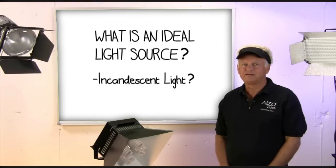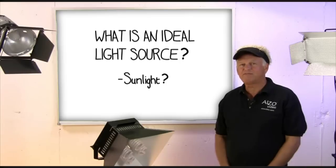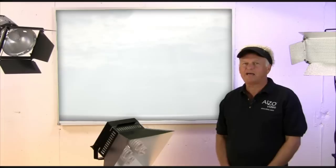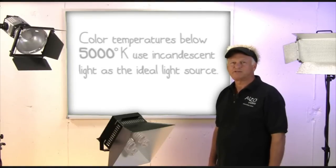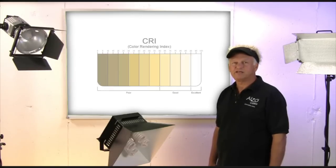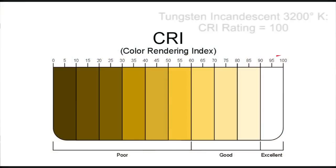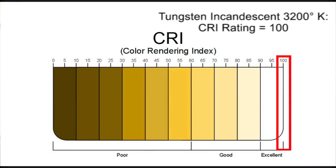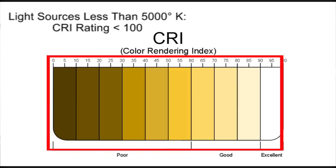Is it incandescent light? Or maybe it's sunlight? The sun can never be considered an ideal light source because it can never be isolated from factors like the varying atmosphere that it passes through or reflects off of. All CRI ratings for color temperatures below 5000 degrees Kelvin consider incandescent the ideal light source. In fact, the CRI value of an incandescent light with a color temperature of 3200 degrees Kelvin is 100. Every other light source with color temperature below 5000 degrees Kelvin is less than 100. Even the sun.